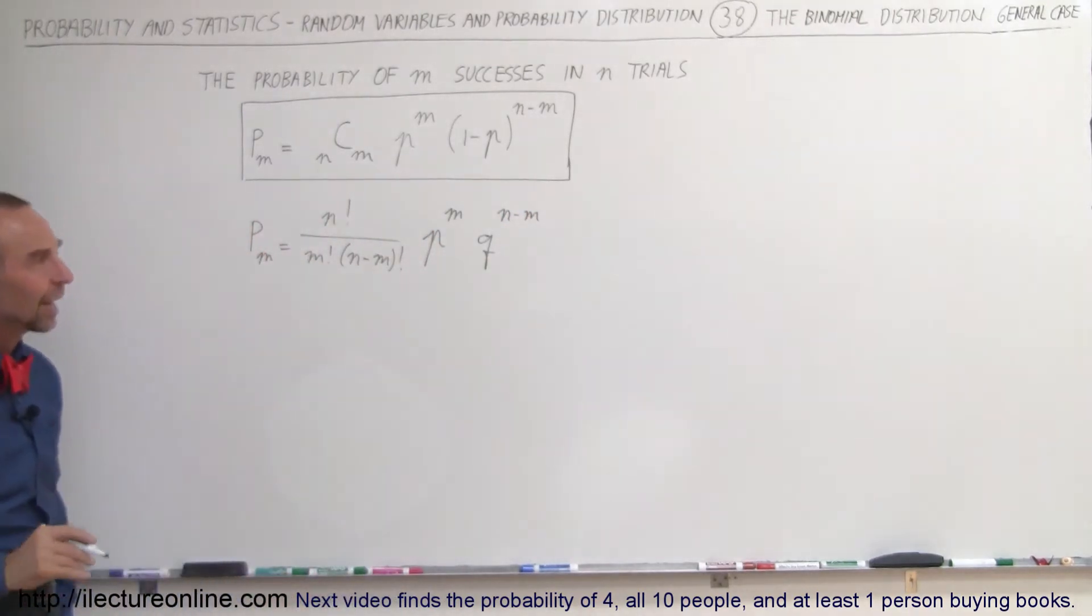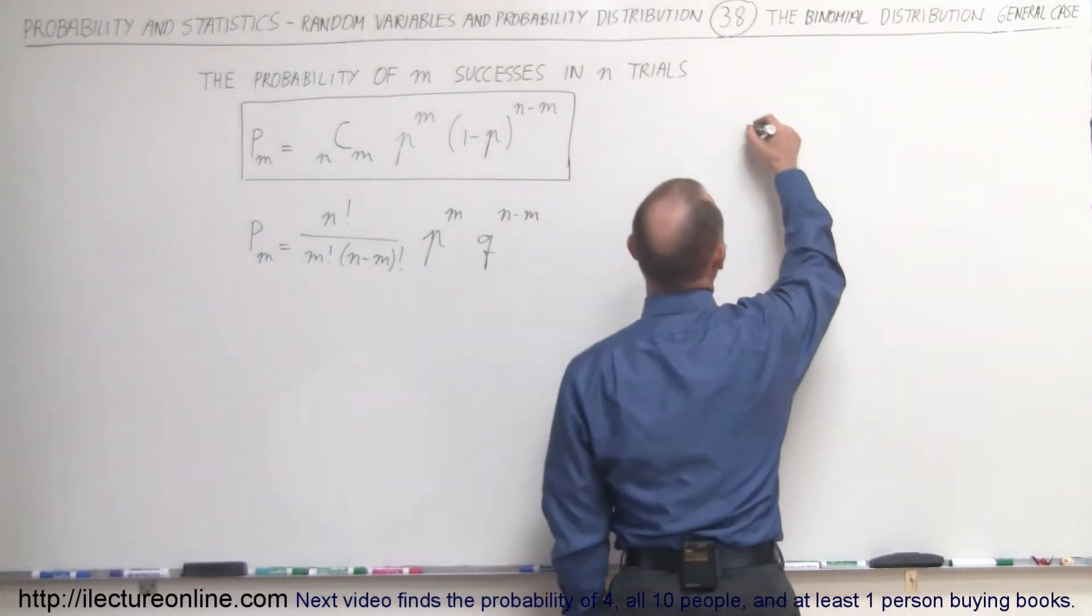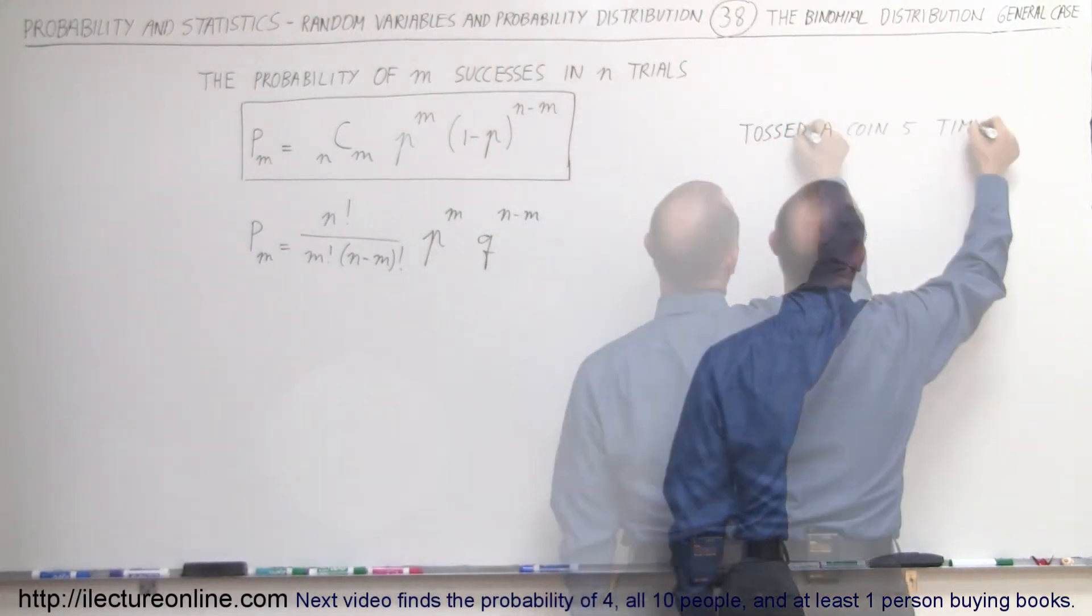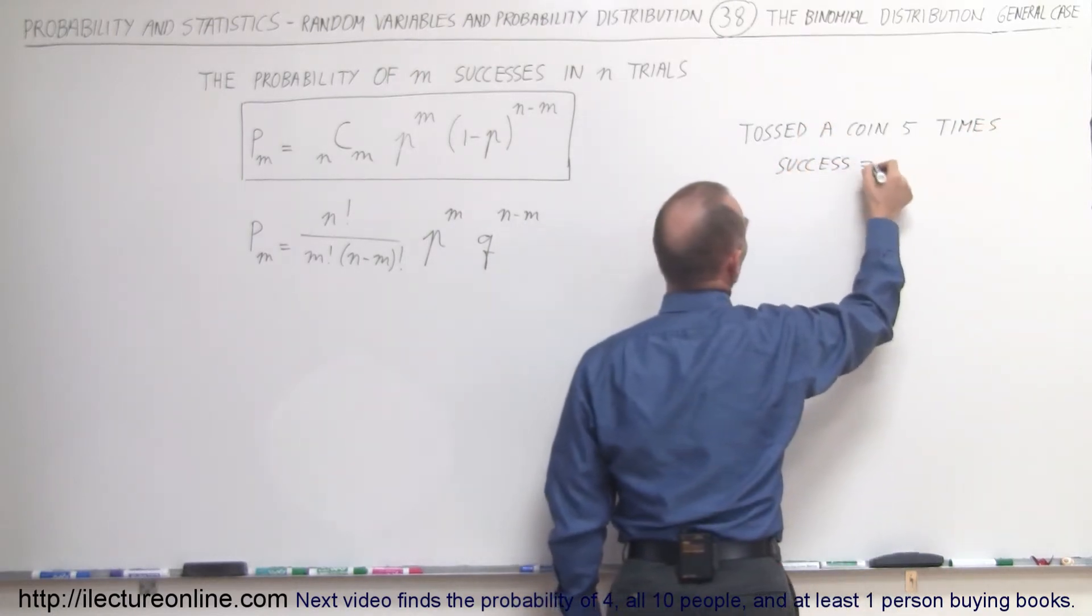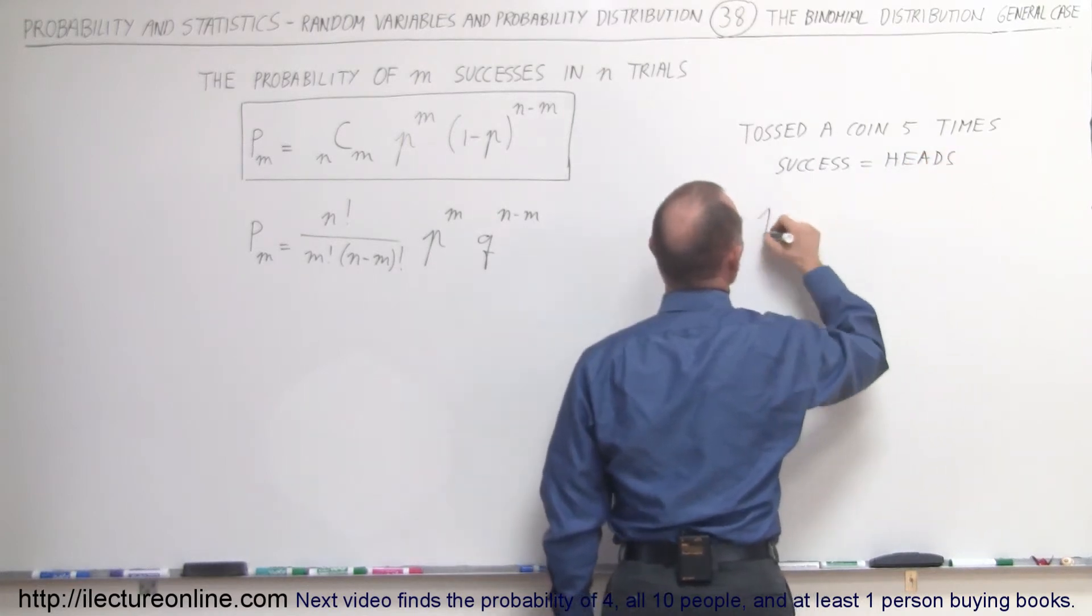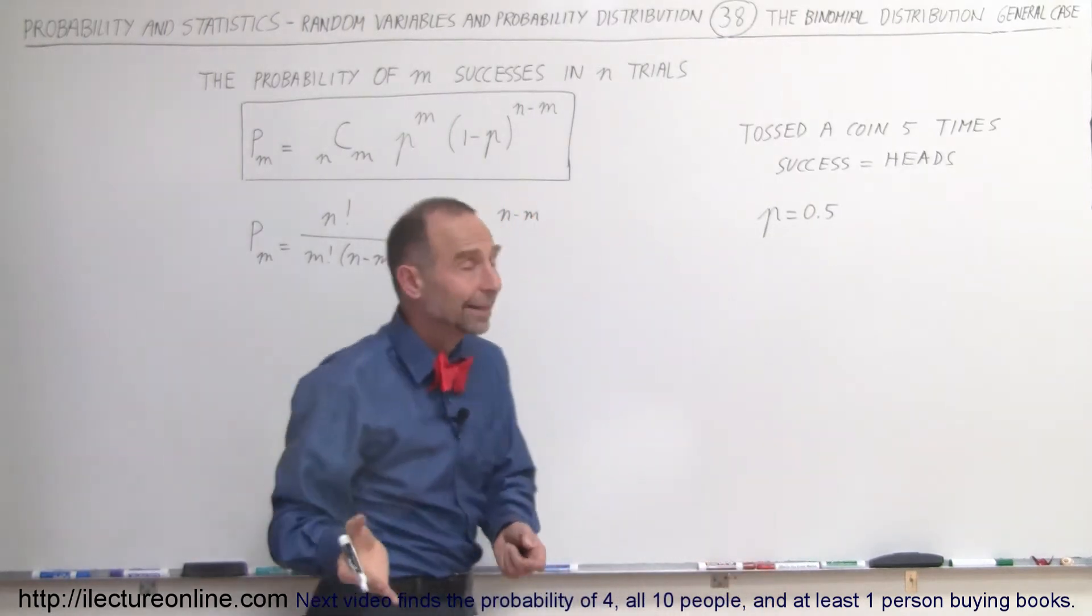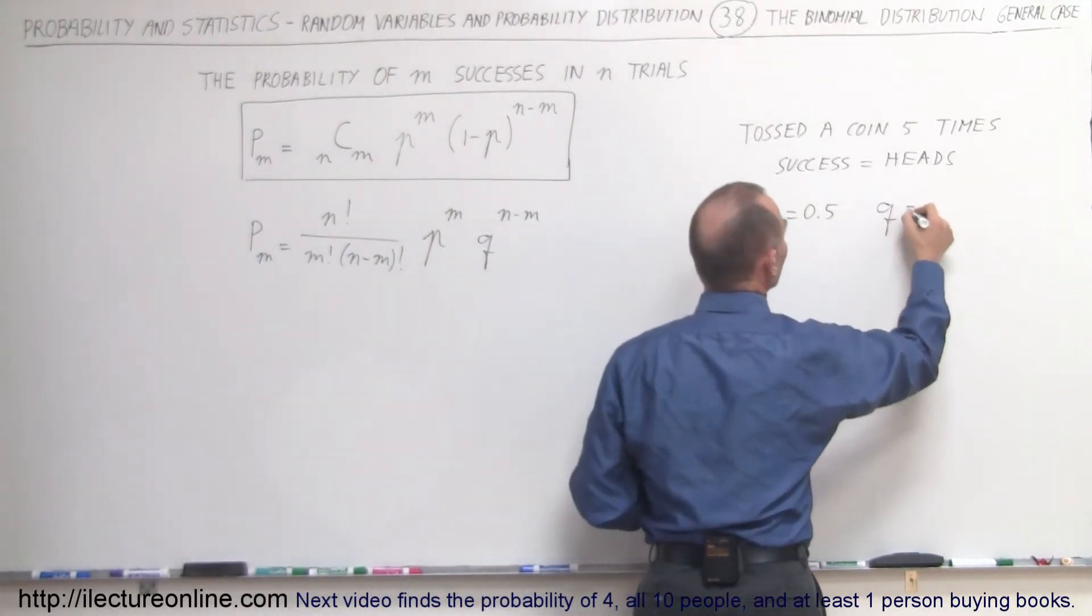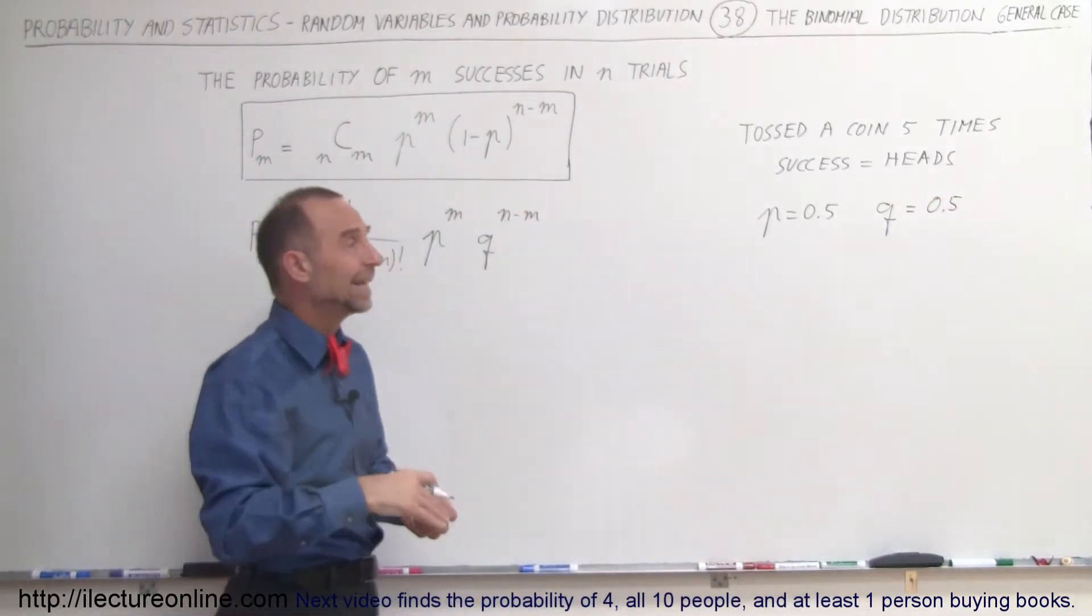Now that we have that, let's do our example again. In the previous example we tossed the coin five times and we said that success was equal to tossing heads. The probability of success was 0.5 because there's a 50-50 chance you get heads, and the probability of failure Q equals 0.5.